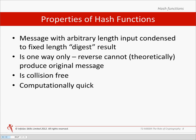A collision-free hash function is one for which it is computationally infeasible to find any two messages that generate the same hash value. Since 1996, it has been shown that MD5 is not collision-free and has other design flaws, hence MD5 is no longer recommended for use. It has also recently been determined that SHA1 has some weaknesses in this area.